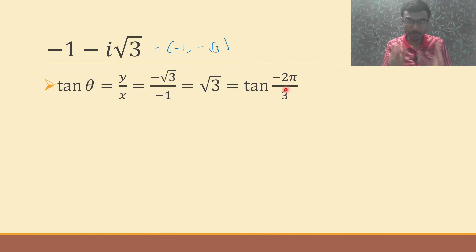Now the basic definition for argument is that argument of any complex number has to lie between -π to π. Argument has to lie between -π to π. Now here I need to get something in the third quadrant. Third quadrant means angle has to be between -π and -π/2. That's why my angle is -2π/3.